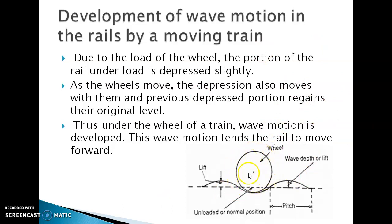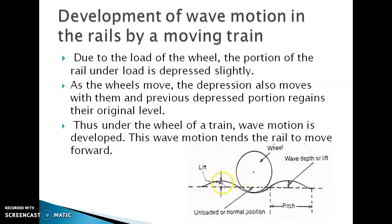This is the wheel of the train, and the dotted line indicates the normal position of the rails. When the train moves, at the point of contact between the train wheel and the rail, due to the load, the rail is depressed. This curvature denotes the depression due to wheel load. As the wheel moves, the depression moves and the previously depressed portion regains its original level. This causes a wave motion in the rails while the train is moving, and is called the wave theory of creep.